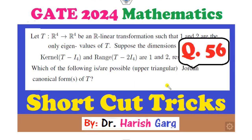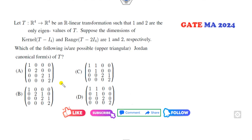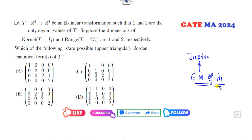Hello students, welcome to the next lecture of GATE 2024. Today I will explain how you can solve question number 16 related to the Jordan canonical form. Remember, whenever you are talking about the Jordan canonical form, you always look at the geometric multiplicity of the eigenvalues. The geometric multiplicity of an eigenvalue is the kernel of (A minus lambda I).